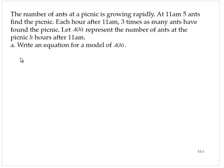The number of ants at a picnic is growing rapidly. At 11 AM, five ants find the picnic. Each hour after 11 AM, three times as many ants have found the picnic. Let A of H represent the number of ants at the picnic H hours after 11 AM. Part A: write an equation for a model of A of H.